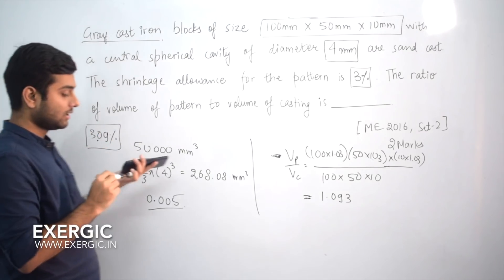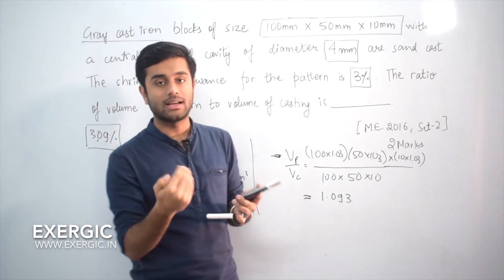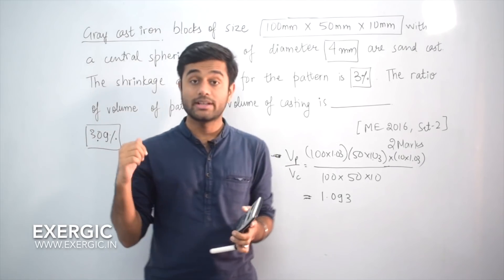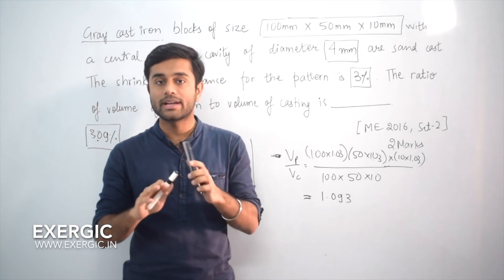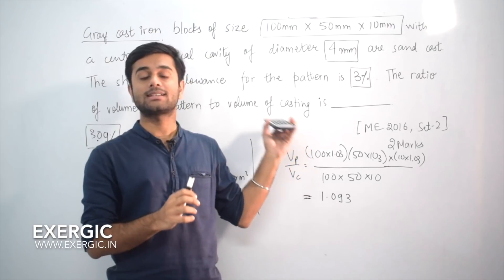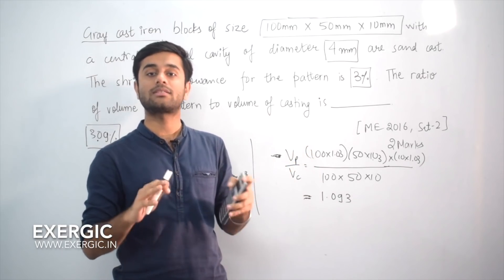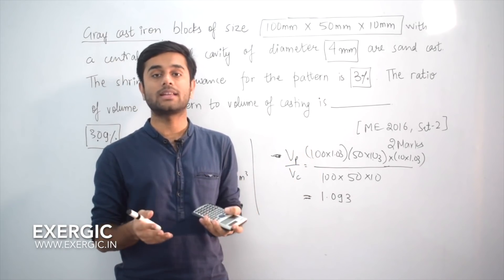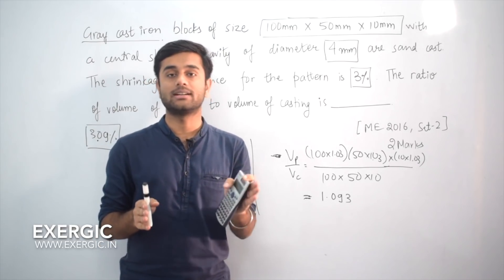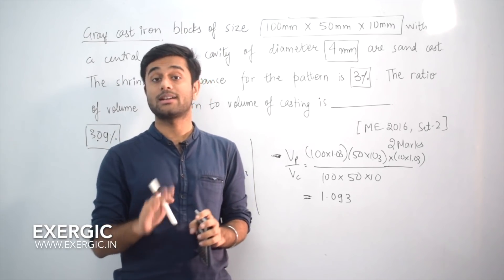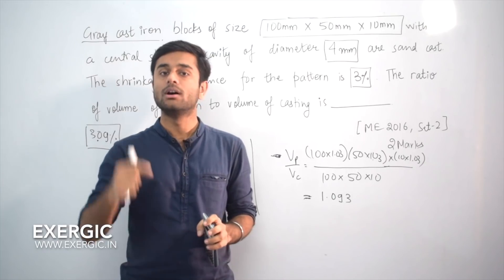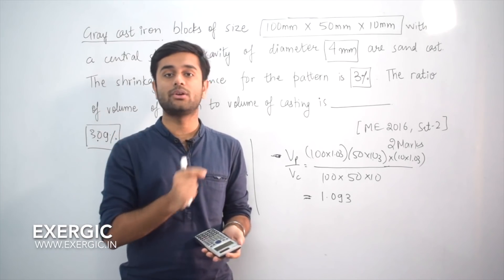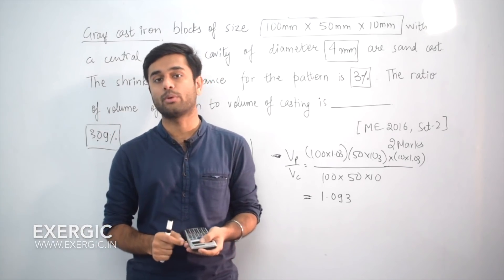If you consider 1 and 97 as the two numbers, it's not exactly 3 percent. So do not get confused into this. This is the extra length. Allowance means extra length, extra dimension that you need to make in order to compensate the shrinkage. So these are - I told you - 4 things in this video. I will recommend you to go through this video again and note down all these 4 points.